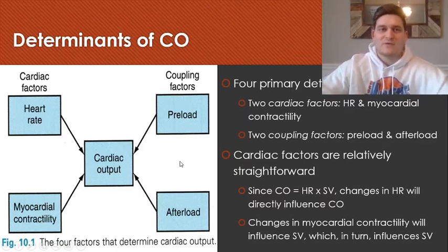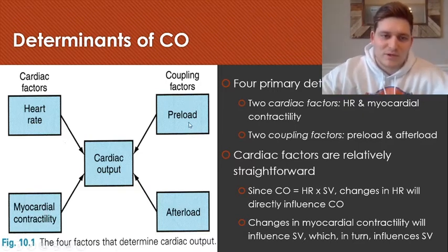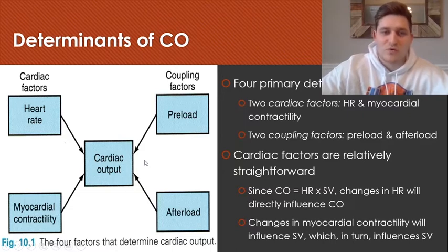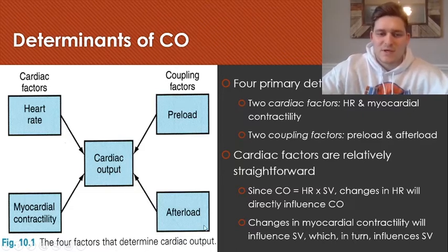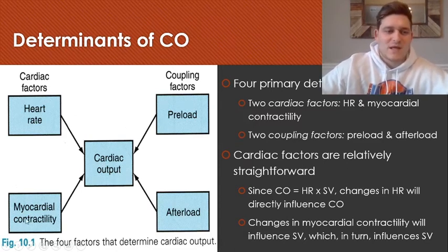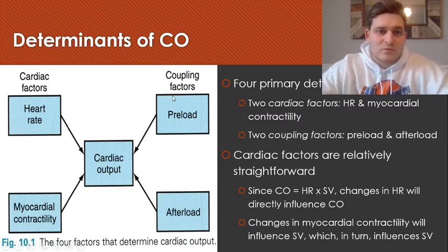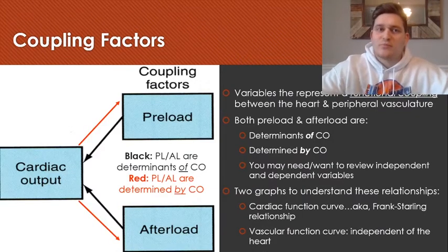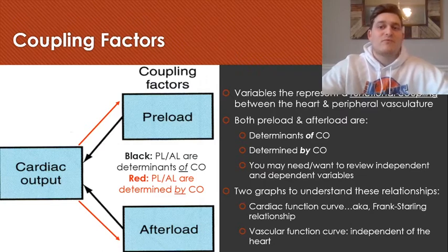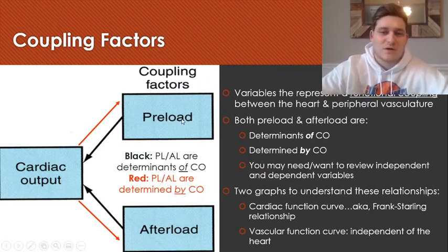We've discussed preload and afterload in the past. We know that increasing preload can help to increase stroke volume and therefore cardiac output, but increasing afterload has an inverse relationship which will decrease stroke volume and cardiac output. Heart rate, myocardial contractility, afterload, and preload all affect stroke volume which impacts cardiac output. The reason why we call preload and afterload coupling factors is because they represent the functional coupling between the heart and the peripheral vasculature.